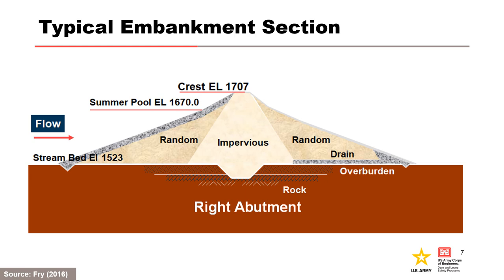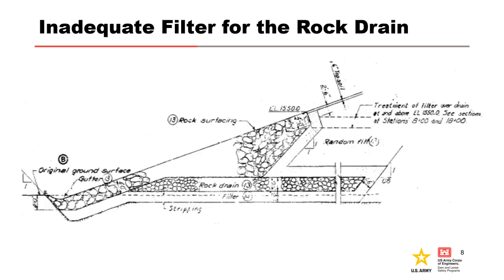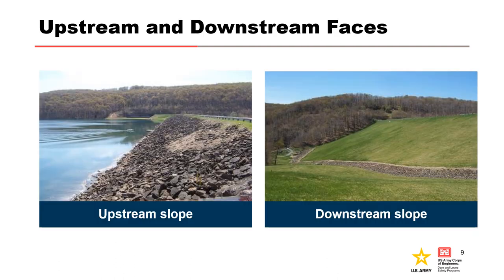The 184-foot tall embankment has an impervious core flanked by random fill zones. The downstream random fill zone has a rock-filled toe underlain by a rock drain. The rock drain was constructed with rock up to 3 cubic feet in size. The filter consisted of a layer of sand and gravel. Borings have revealed that the filter is missing in many areas, which suggests that it likely washed into the drain. The upstream embankment slope is covered with rock protection, with slopes ranging from 2.5 to 1 to 4 to 1.